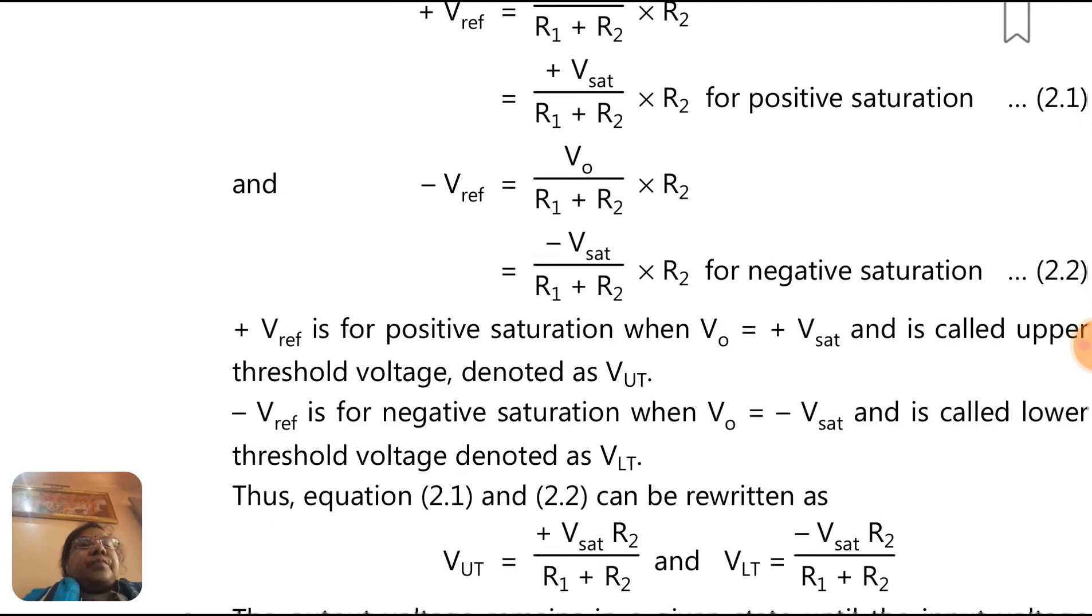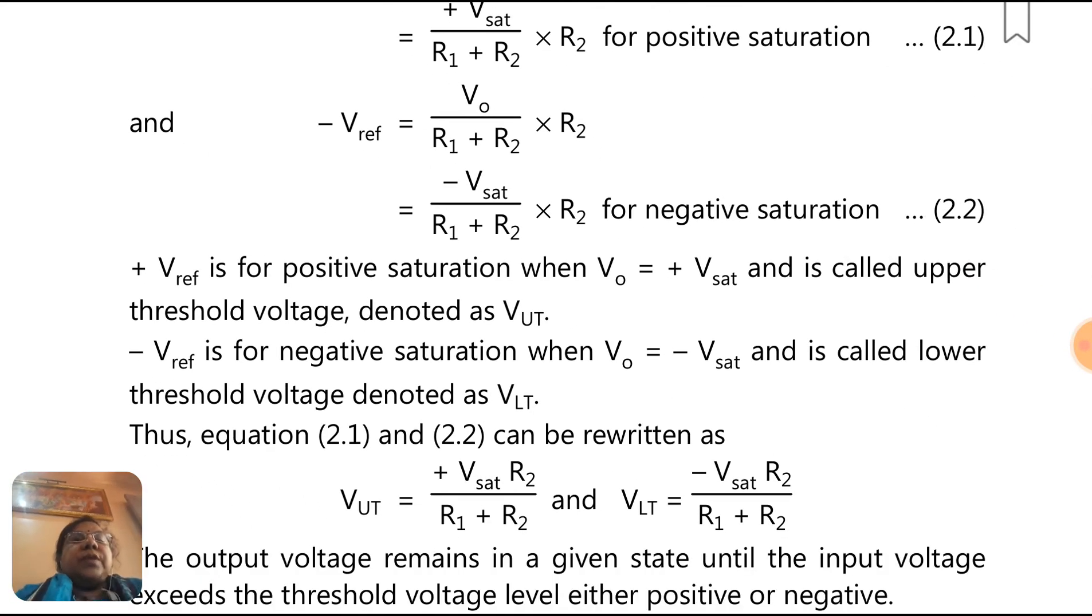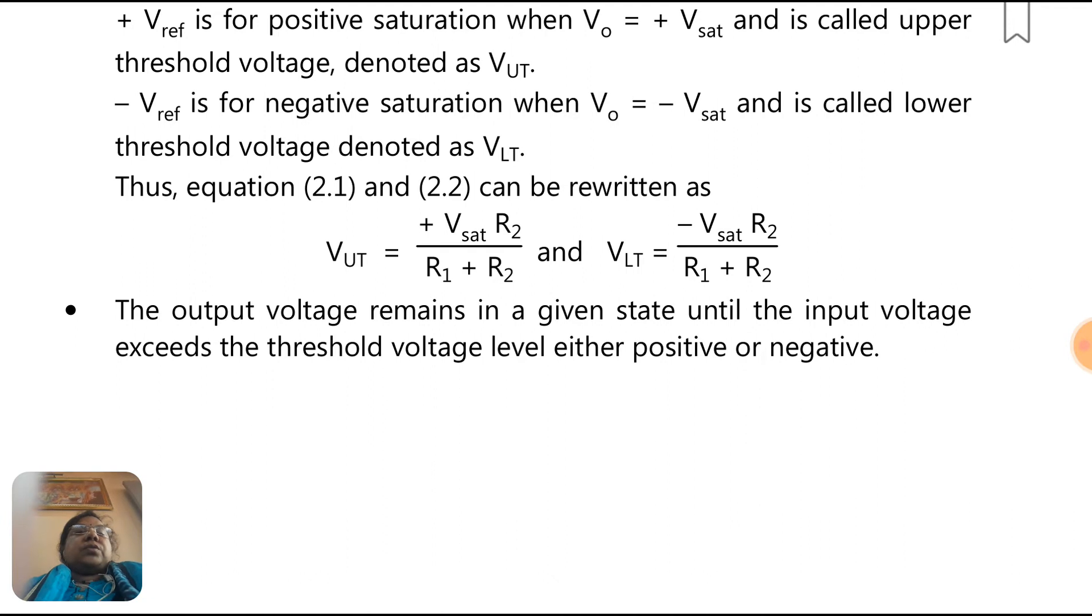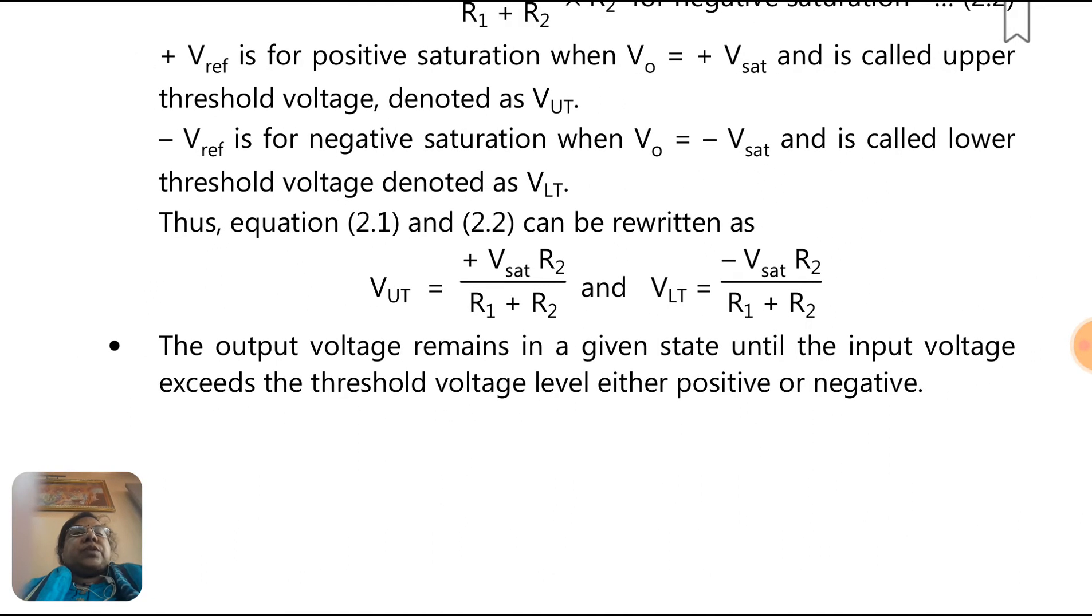Plus V_sat upon R1 plus R2 times R2 for positive saturation, and minus V_ref for negative saturation. Plus V_ref when V0 equals plus V_sat is called the upper threshold voltage, denoted as V_UT. And minus V_ref when V0 equals minus V_sat is called the lower threshold voltage, denoted as V_LT.